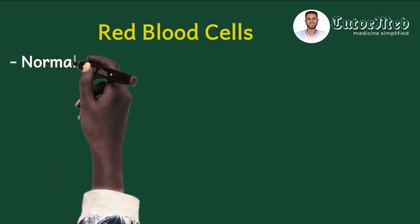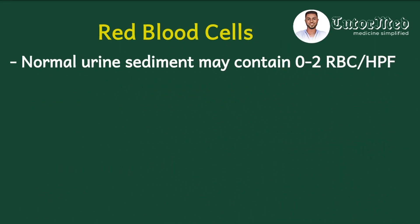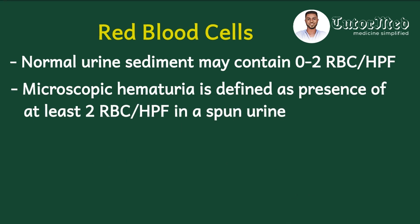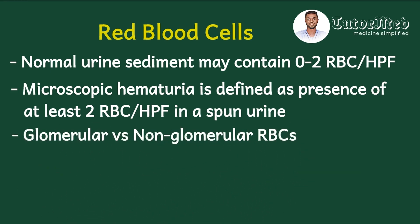Now let's begin with the cells. For red blood cells, normal urine usually contains no red blood cells but can contain at most two red blood cells per high power field, especially after strenuous exercise. The high power field means the lens magnifies objects by 400 times. Hematuria may be gross or microscopic; by definition, microscopic hematuria is the presence of at least two red blood cells per high power field in a spun or centrifuged urine.